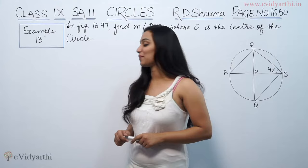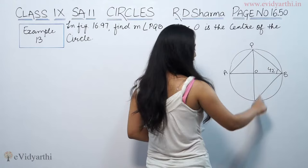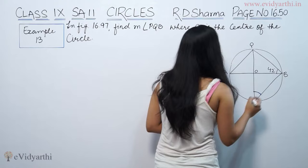Hi, this is Khushbu with another question on circles. This is example number 13 from Adi Sharma, page number 16.50. It says: in figure 16.97, find the measure of angle PQV. So we have to find this angle.